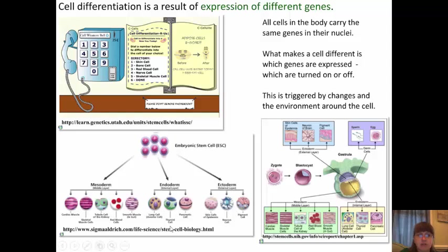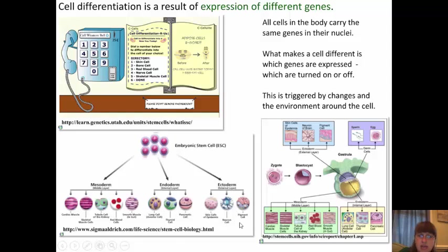Embryonic stem cells can become part of the mesoderm — such as cardiac muscle, skeletal muscle cells, tubules within the kidney, red blood cells, or smooth muscle cells. Or those embryonic cells can become part of the endoderm — lung cells, thyroid cells, or pancreatic cells. The last type that can be developed from these embryonic stem cells is the ectoderm: skin cells, neural cells, and pigment cells. There is a little activity that we will hopefully get to in a few days when we start working on stem cells in class.